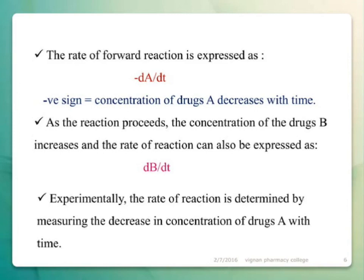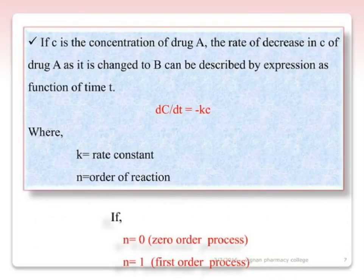The concentration of drug A decreases with time. As the reaction proceeds, the concentration of drug B increases, and the rate of reaction can also be expressed as dB/dt. Experimentally, the rate of reaction is determined by measuring the decrease in concentration of drug A with time. If C is the concentration of drug A, the rate of decrease in C as it changes to B can be described as a function of time t.